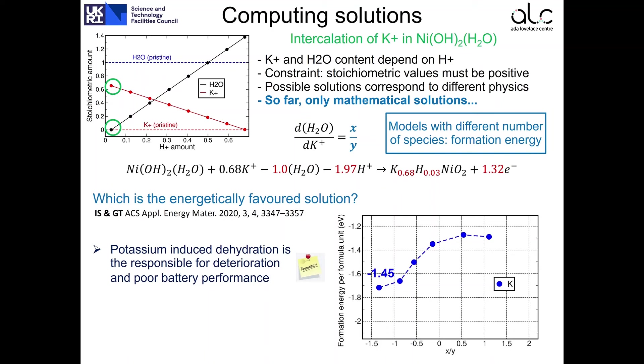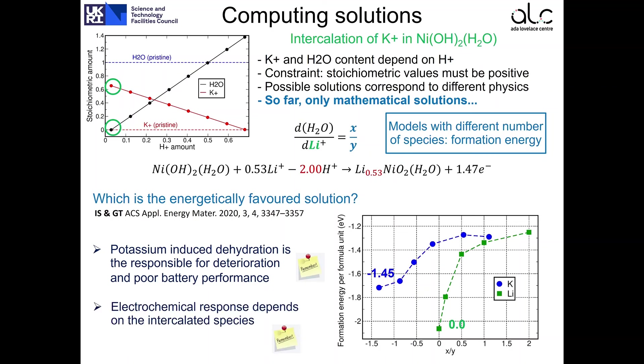We have repeated the exercise, this time by performing experiments using a solution that contains lithium instead of potassium, and the results are completely different. We find that the lowest formation energy per formula unit is found when the value of X divided by Y is 0. This means that there is no water that participates in the reaction. You see? No water. In other words, the intercalation of lithium does not change the water content within the material. And this result is in agreement with the evidence that the material responds much better to battery cycling when you use lithium in comparison to when you use potassium. So what we learned is that the material responds differently depending on the intercalated species.